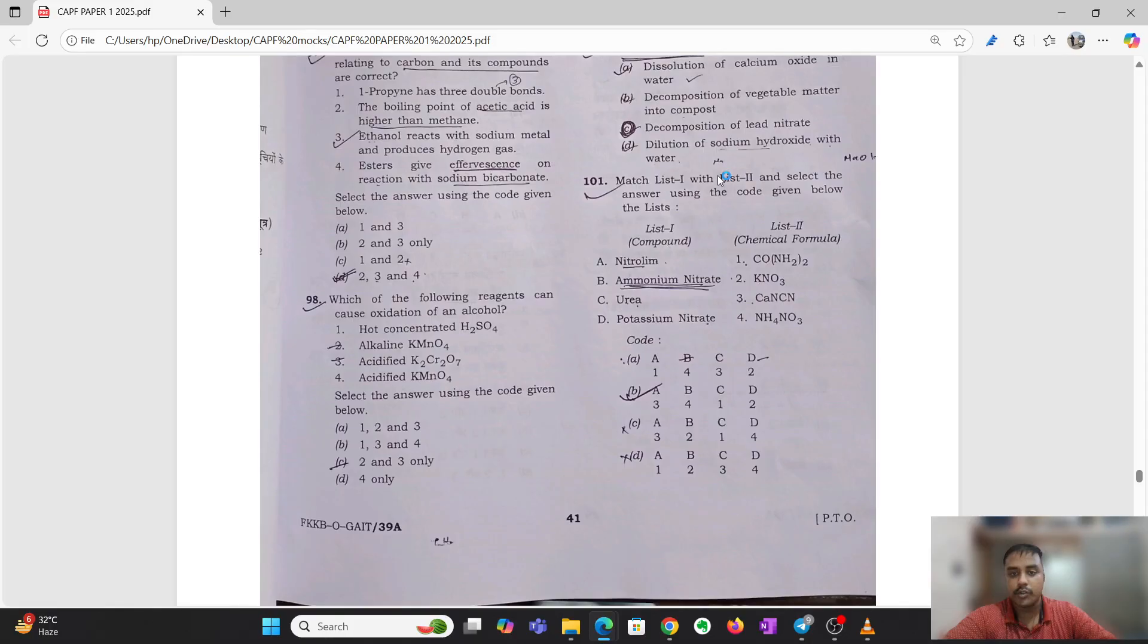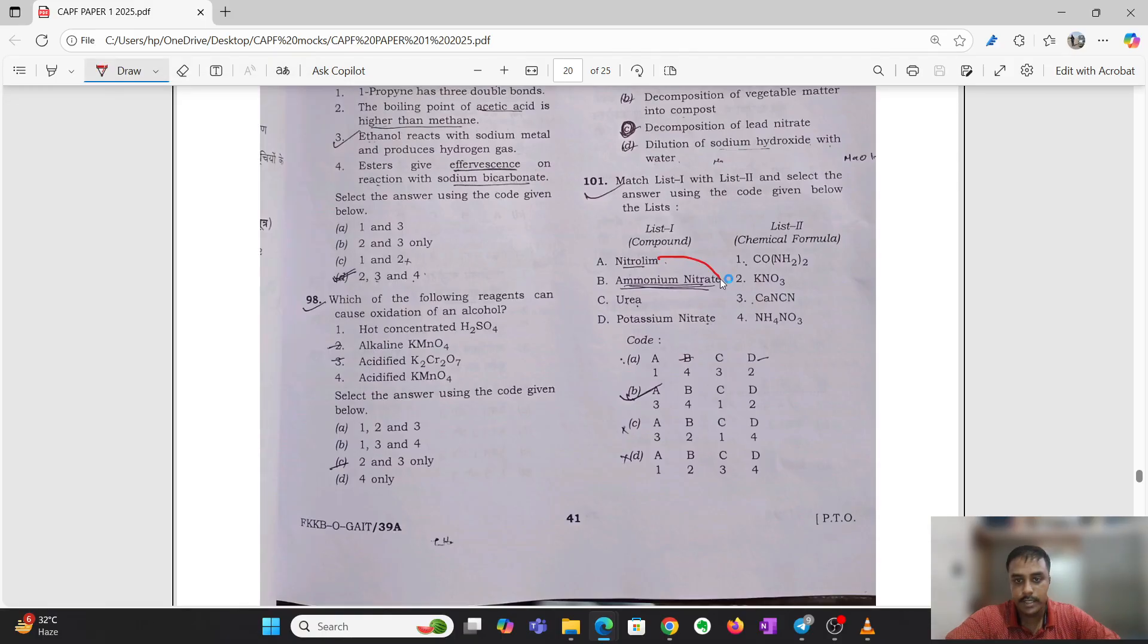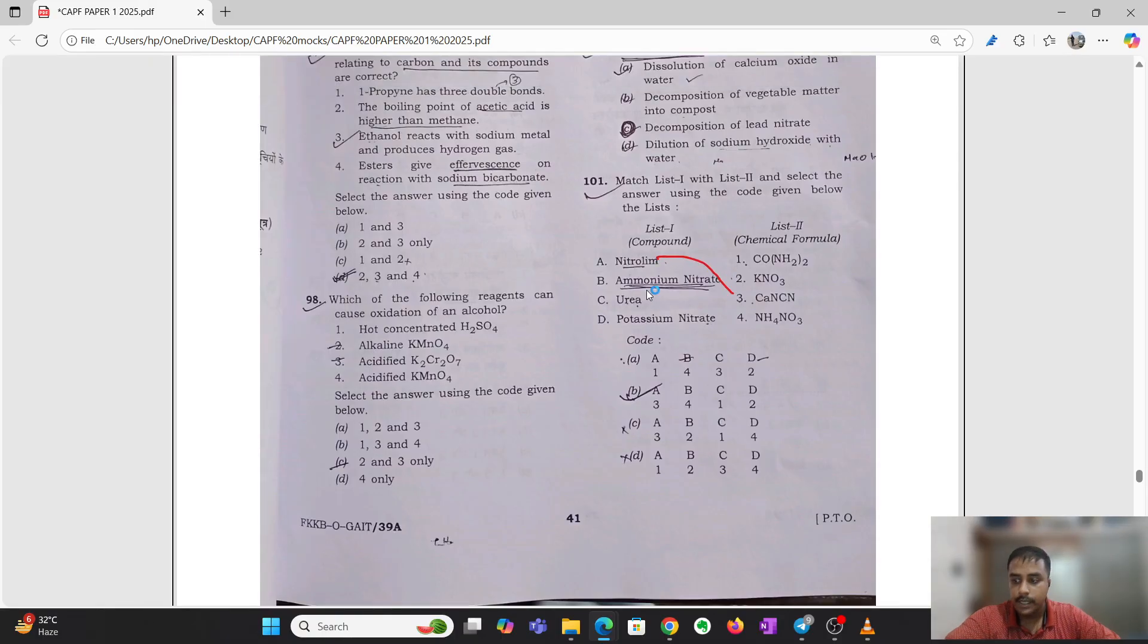In the first question, if you see the following, it has been given that nitrolim which is formula CaCN, then ammonium nitrate is NH4NO3, then urea which is CO(NH2)2, potassium nitrate is KNO3. So the answer is A3, B4, C1, D2.